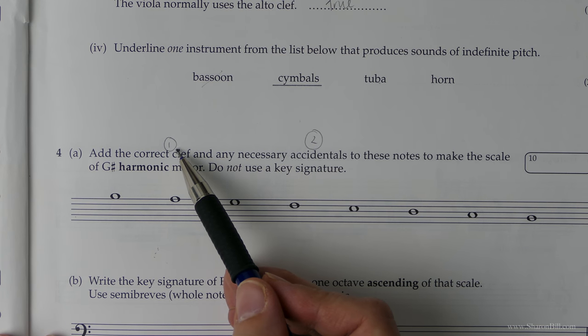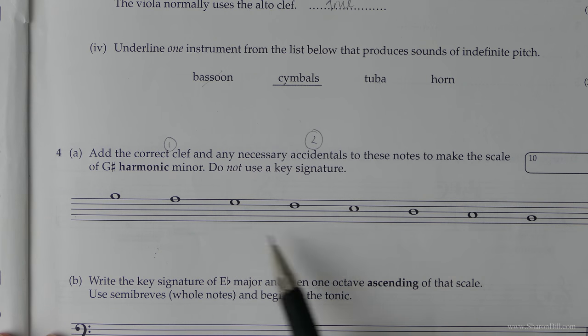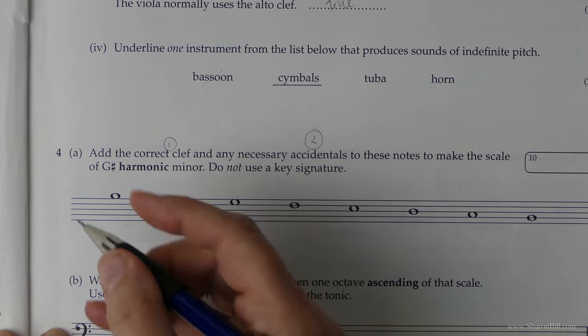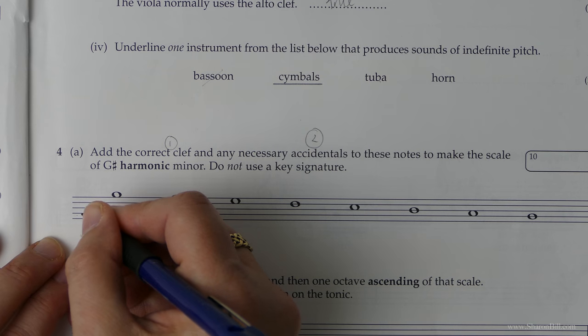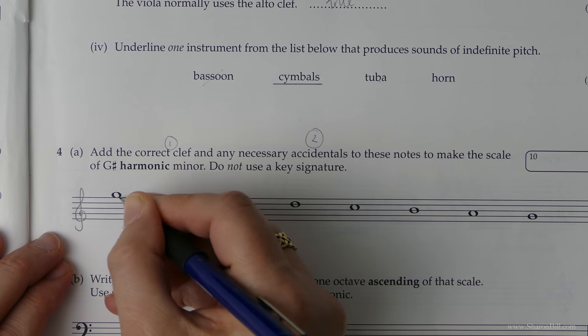So G-sharp harmonic minor must begin and end on a G-sharp. And so that must be treble clef. Otherwise it wouldn't be correct. If it was bass clef it would be a B. So that wouldn't be appropriate.